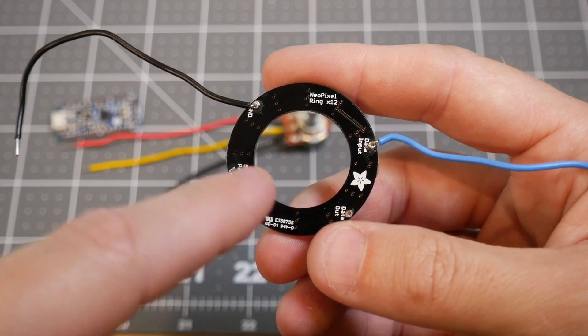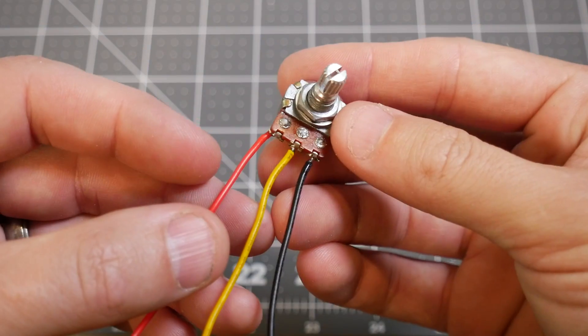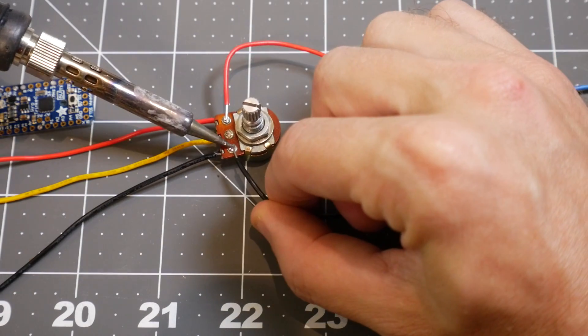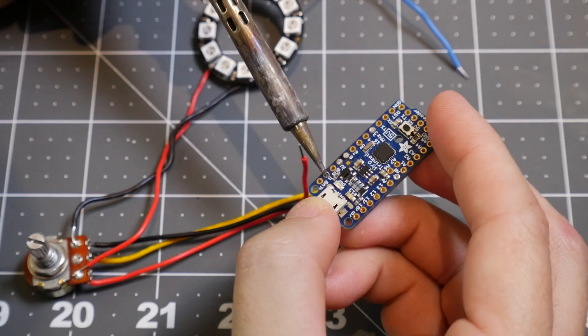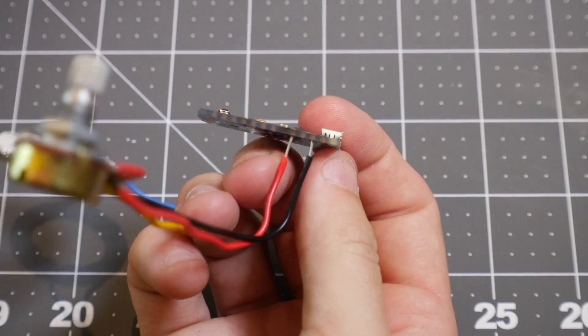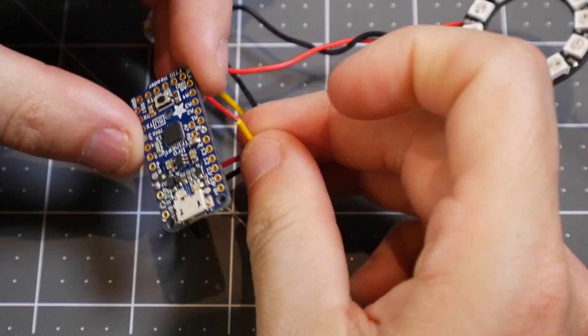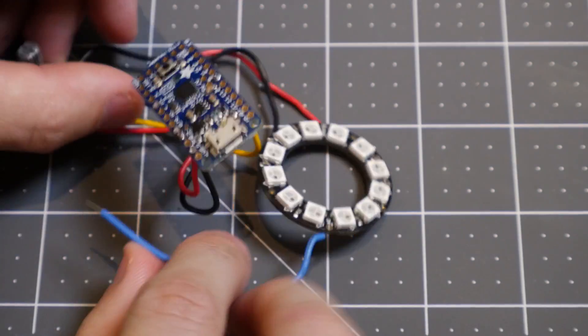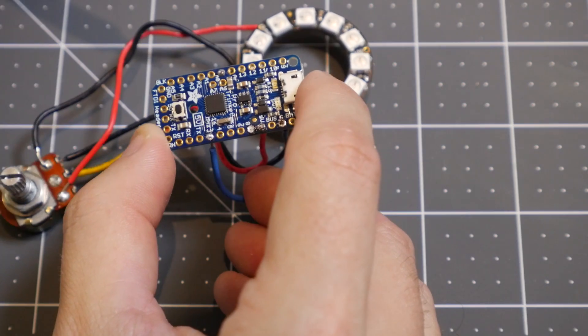The NeoPixel ring has power, ground, and a data input. I connected the powers and the grounds between the NeoPixel ring and the potentiometer. Then I connected those to the ground and the 5 volt power on the Pro Trinket. This is just for prototyping, they'll be put in better later. The middle lead of the potentiometer is connected to an analog input so I can measure a range of values. The data input from the NeoPixel ring goes into a digital pin.